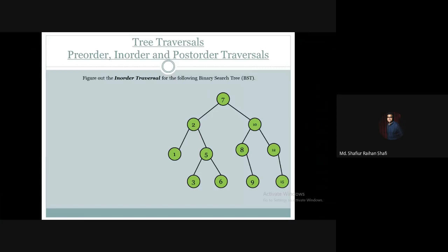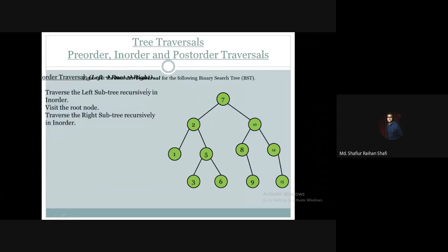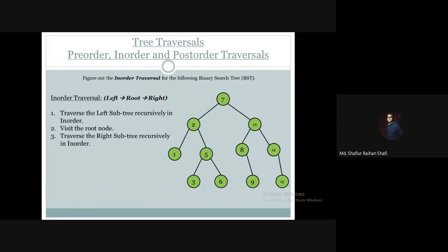So what is in-order traversal? In in-order traversal, you have to traverse the left subtree recursively in in-order manner, then you will visit the root node, and lastly you will traverse the right subtree recursively also in in-order manner. So the sequence is: first traverse left subtree, then visit the root, then traverse the right subtree.